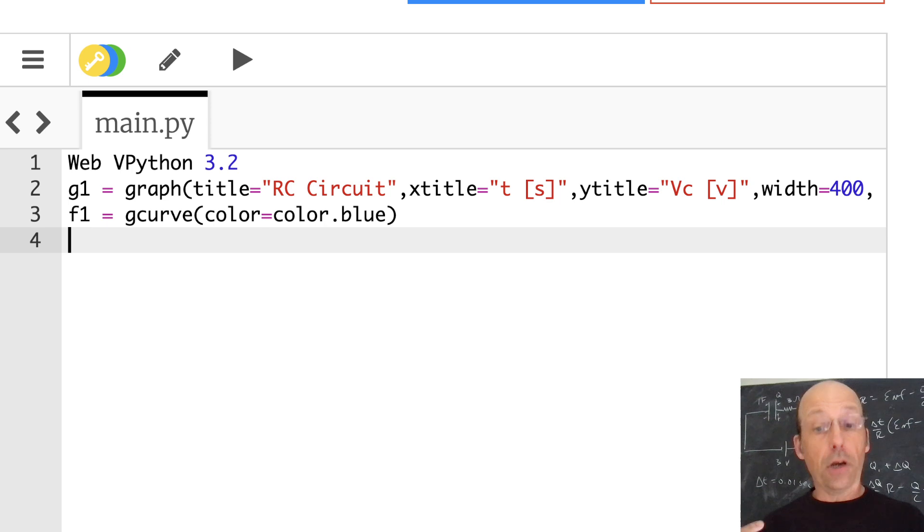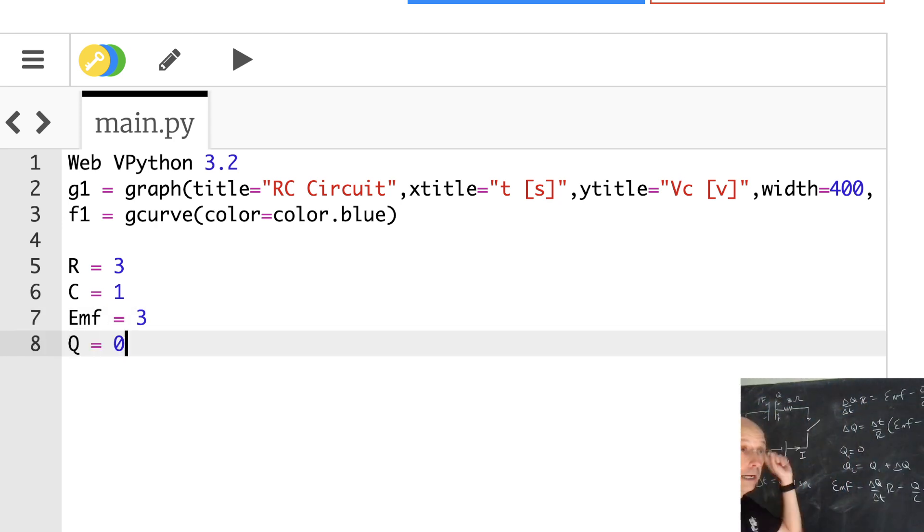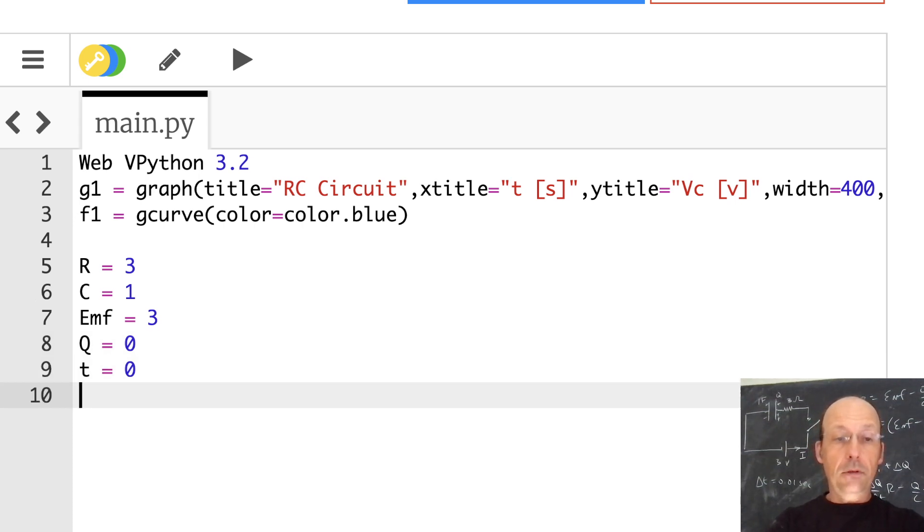And then I'm going to need something to plot. That's a curve. F1 equals gcurve. Color equals color.blue. Now let's go ahead and put all our constants in there. So I said R is 3. C is 1, 1 Farad. EMF is 3 volts. Q equals 0. I'm going to start with an uncharged capacitor. So Q is 0. T is 0. DT is 0.01. And let's run this for 5 seconds. So I can do that with while T is less than 5.